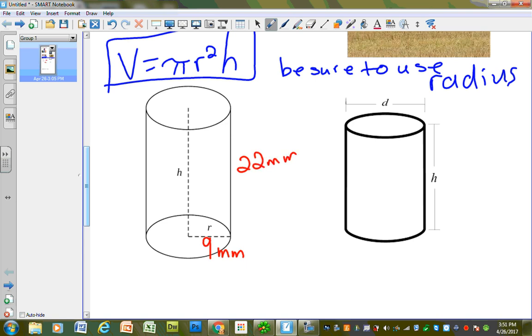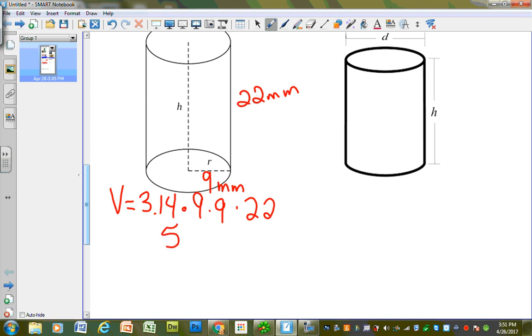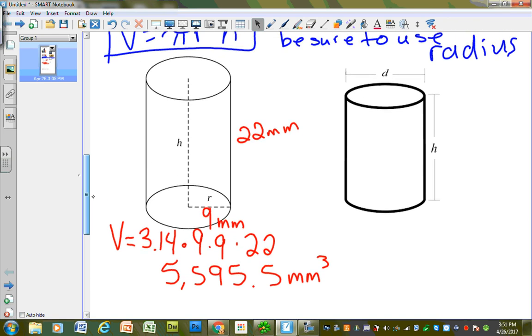We want to find the volume for that. I'm just going to use my formula. You're going to write down 3.14 times 9 times 9 times 22. If you know that 9 times 9 is 81, you can just write down 81 instead. Go ahead and use your calculator and multiply that out. When I do that, I get 5,595.5 cubic millimeters. Remember, we always cube our volume because we want to know how much fits inside.